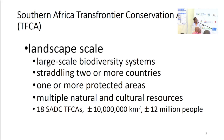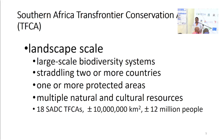When we look at Southern Africa transfrontier conservation areas in terms of landscape scale, these are large-scale biodiversity systems straddling at least two countries, with one or more protected areas within the TFCA and multiple natural and cultural resources. In the Southern Africa Development Community area, we have 18 TFCAs in various stages of formation, accounting for perhaps more than 10 million square kilometers of land area and more than 12 million people.